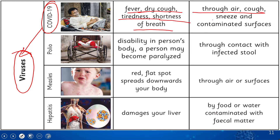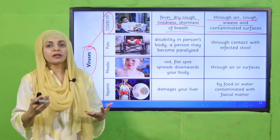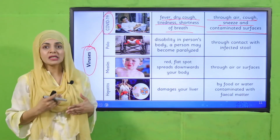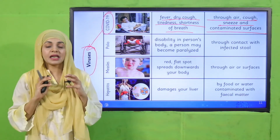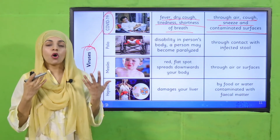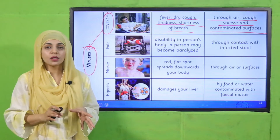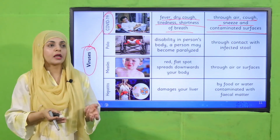COVID-19 spreads through air, coughing, sneezing, and contaminated surfaces. If you go near someone who already has COVID, it can enter your body through the air. That is why it is repeatedly said to wear a mask, maintain six feet distance from people, and use sanitizer frequently.